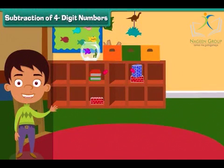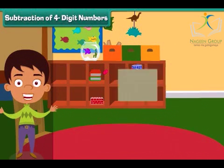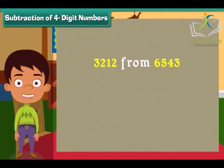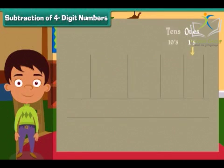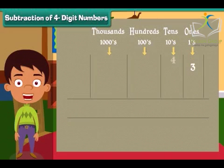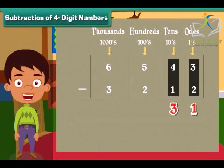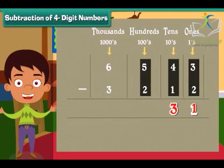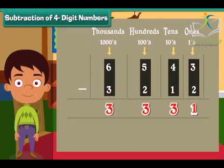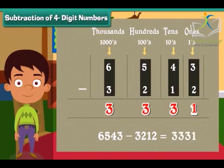Subtraction of 4-digit numbers. Friends, Ben has now moved to solve subtraction. Let us subtract 3212 from 6543. Write the numbers in the respective columns. We start subtraction from the ones column: 3 minus 2 is equal to 1. Subtract tens: 4 minus 1 is equal to 3. Similarly, subtract hundreds and thousands: 5 minus 2 is 3 and 6 minus 3 is 3. So 6543 minus 3212 is 3331.